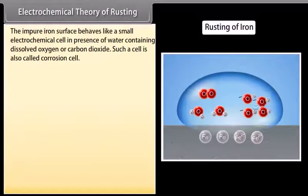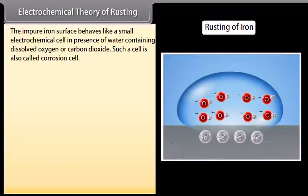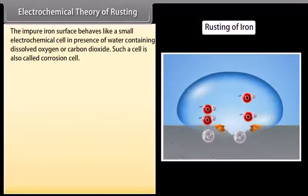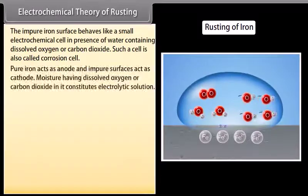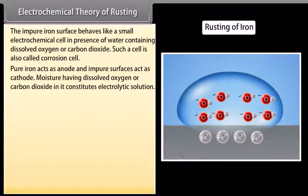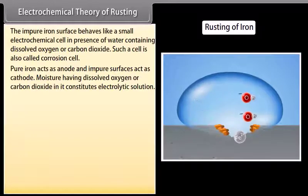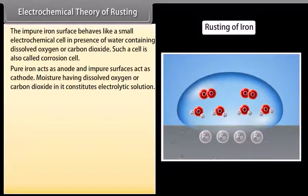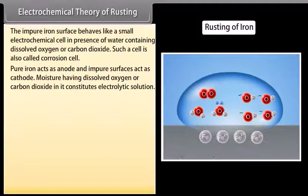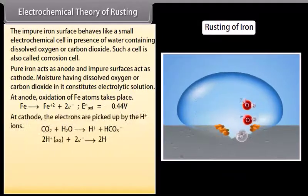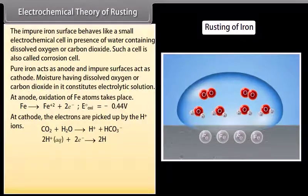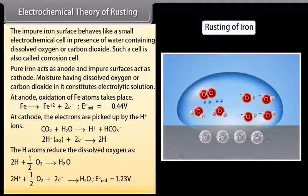Electrochemical theory of rusting: According to this theory, the impure iron surface behaves like a small electrochemical cell in presence of water containing dissolved oxygen or carbon dioxide. Such a cell is also called corrosion cell. Pure iron acts as anode and impure surfaces act as cathode. Moisture having dissolved oxygen or carbon dioxide in it constitutes electrolytic solution. At anode, oxidation of iron atoms takes place. At cathode, the electrons are picked up by H+ ions. The hydrogen atoms reduce the dissolved oxygen.